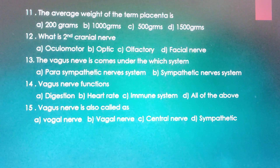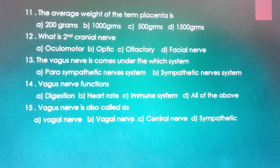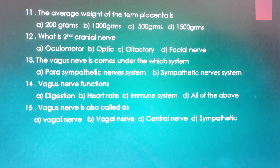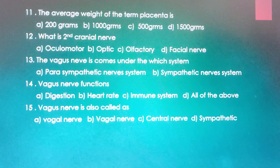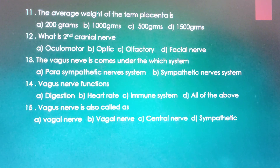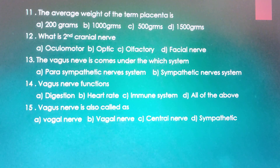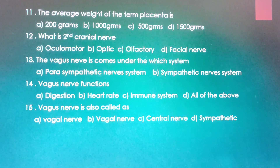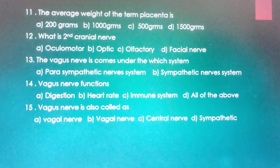What are the functions of the vagus nerve? Digestion, heart rate, immune system, or all of the above. The correct answer is all of the above — D is the correct answer. The vagus nerve controls all vital organs, including respiration, heart rate, immune system, and the digestion process.